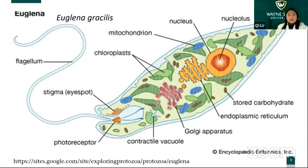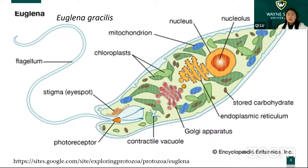This Euglena is a protozoan or mycobium. Today I'm going to focus on the photoreceptor located here — we can see it's very close to the flagellum, so it's functional. The blue light shining on this spot will produce cyclic AMP.